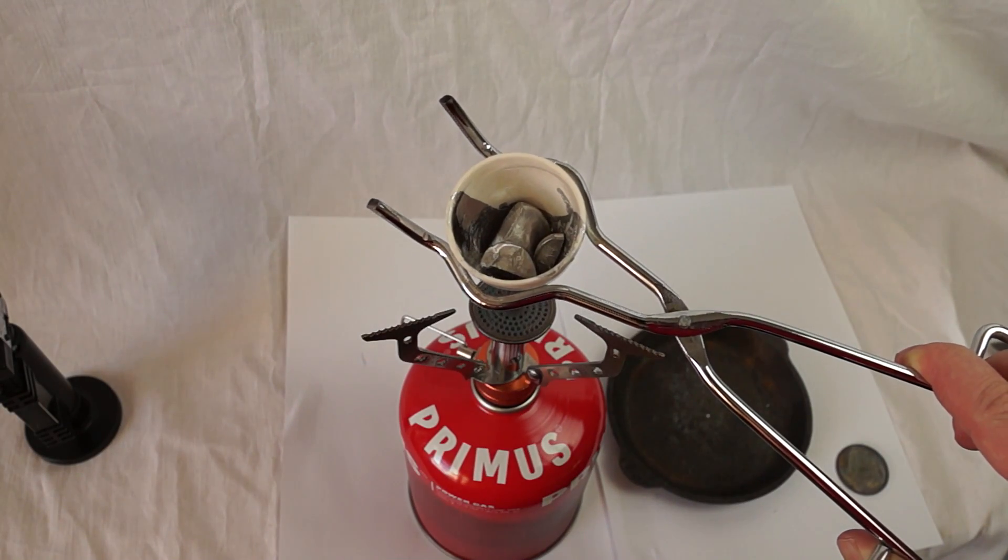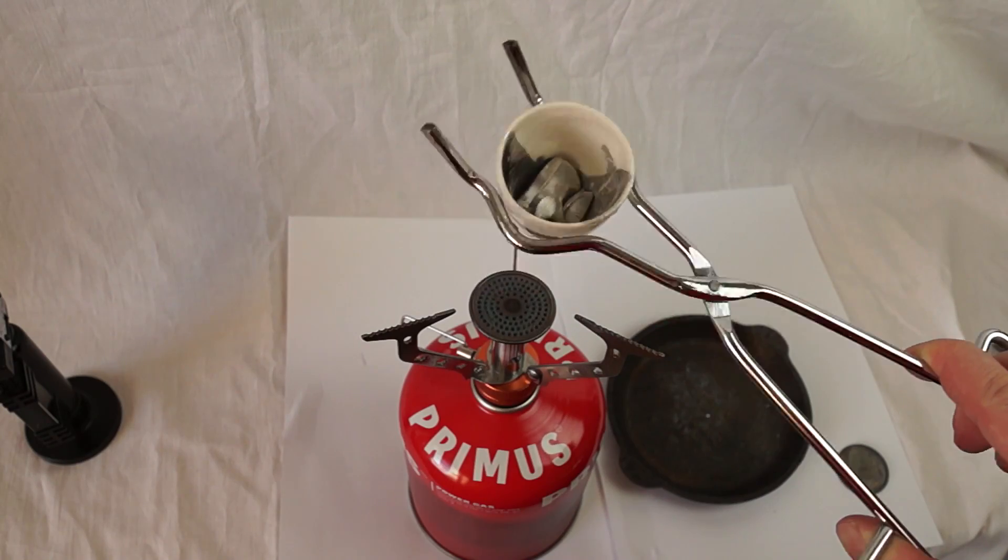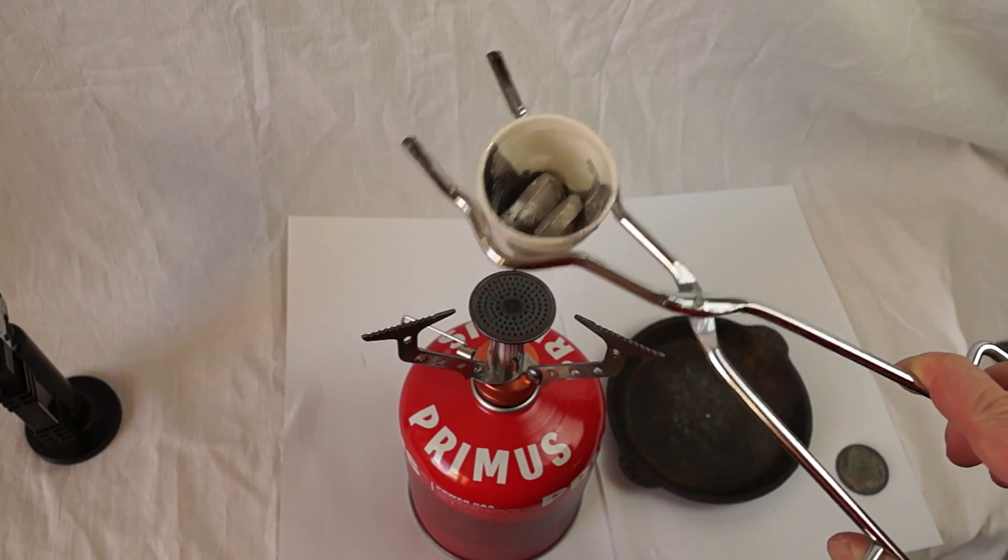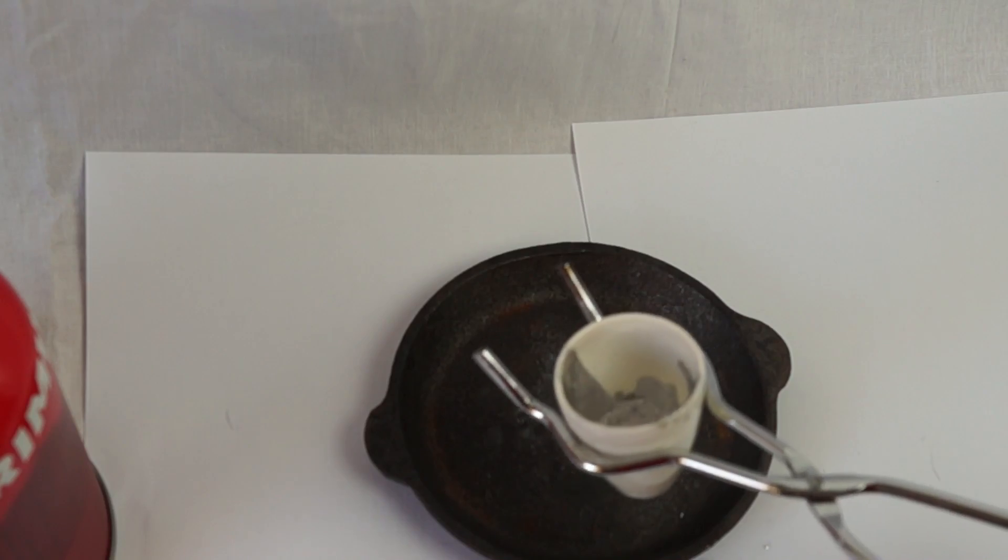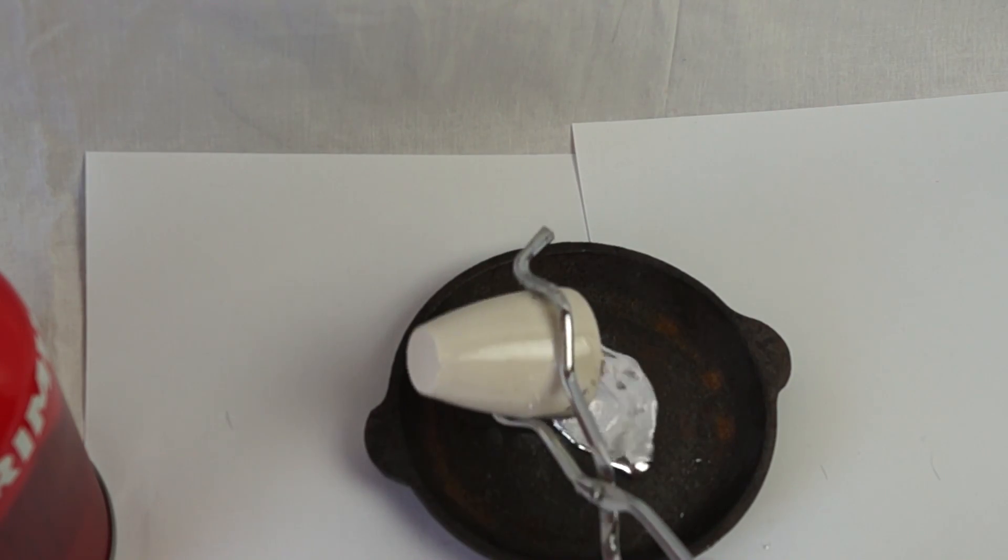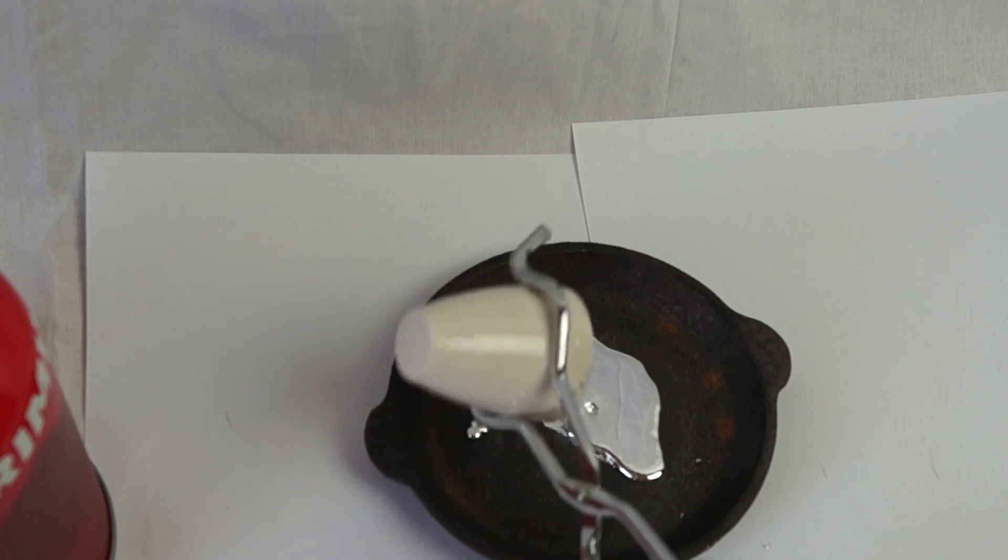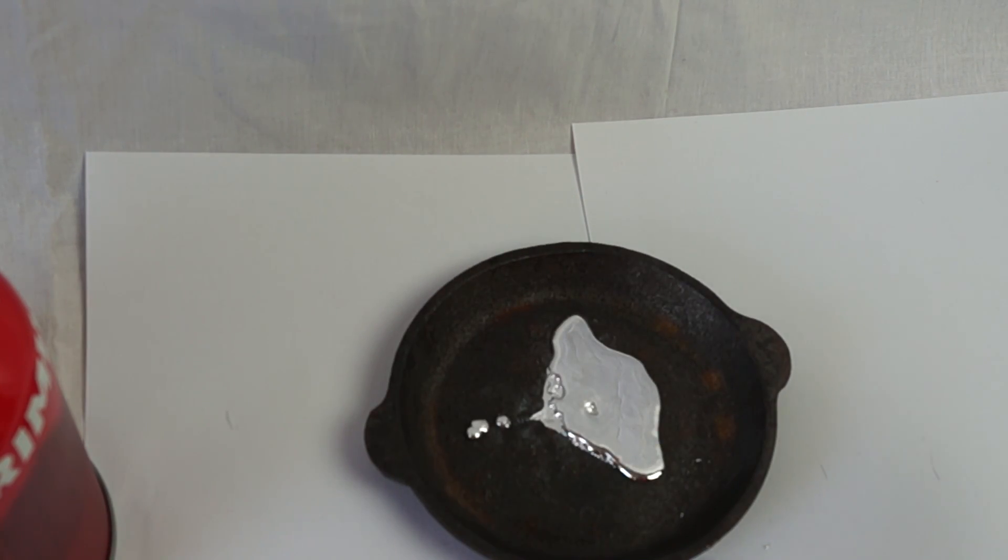In order to demonstrate you the most interesting property of indium, I decided to cast a thin plate from it. Pure indium has a melting point of 157 degrees Celsius. It's possible to easily cast different shapes from this metal.